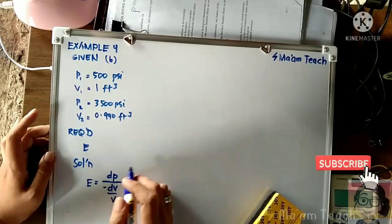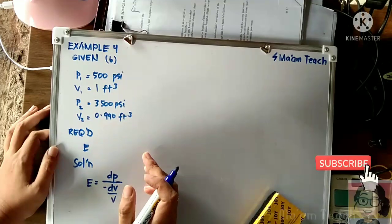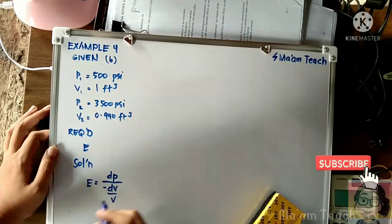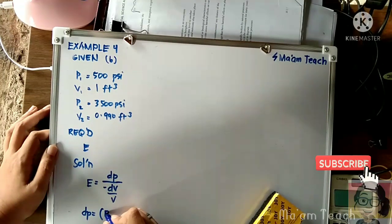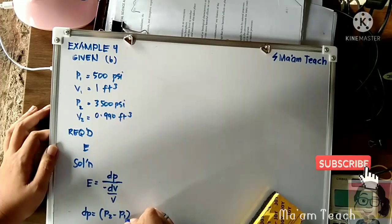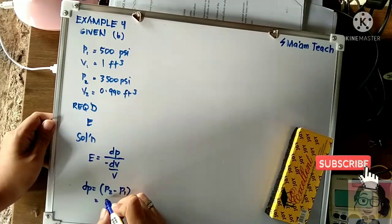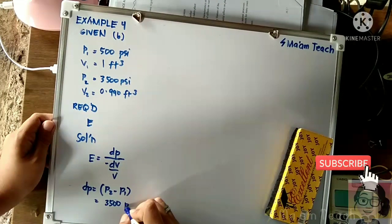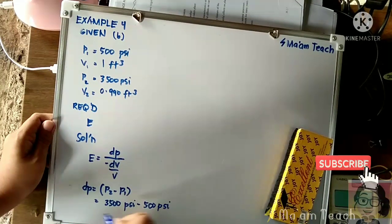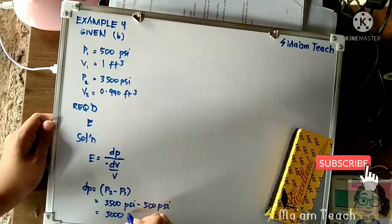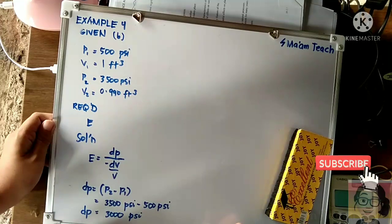Now how are we going to solve for the change in pressure? Change in pressure can simply be solved by subtracting the final pressure from the initial pressure. So let us solve first for dP - that is P2 minus P1. Substituting, we have 3,500 psi minus 500 psi, so that is obviously 3,000 psi. So that is our change in pressure.